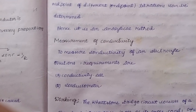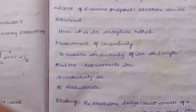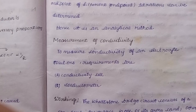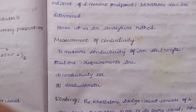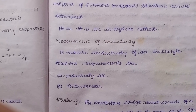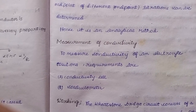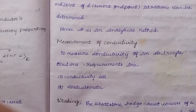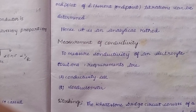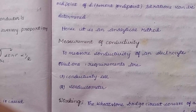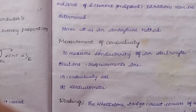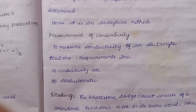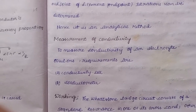Conductometry is an analytical method — analysis based on measurement. By performing any analysis using this method, we can determine end points. The measurement of conductivity of an electrolyte solution is at its core.